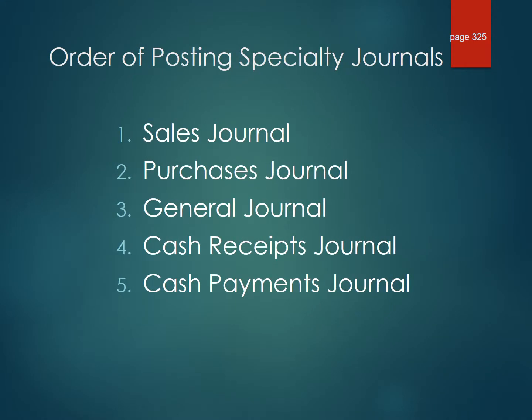The order of posting specialty columns — when you post, this is the order you need to follow: First, post the sales journal. Second, post the purchases journal. Third, post the general journal. Fourth, post the cash receipts journal. Fifth, post the cash payments journal.